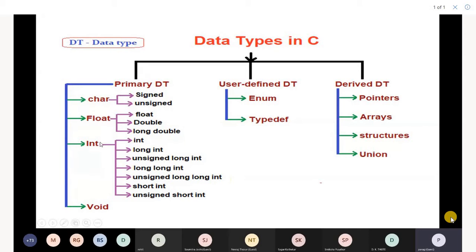So primitive data types: char, float, int, void. Depending on the size, they have various types. So you need to remember, primitive are char, float, int, void.